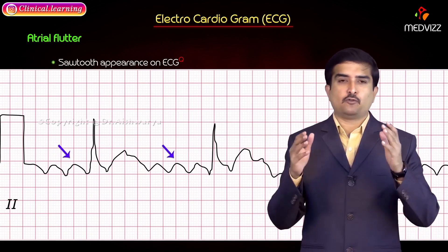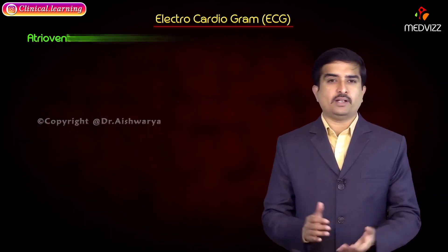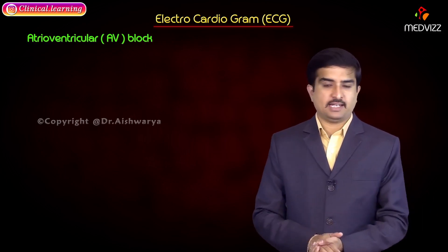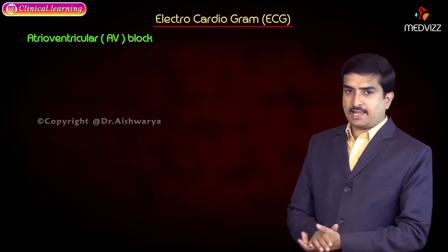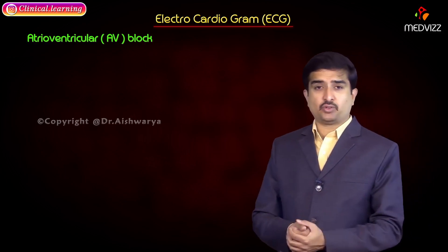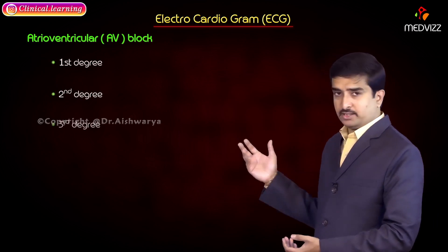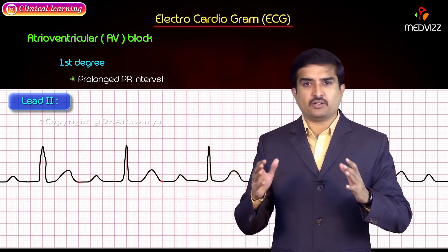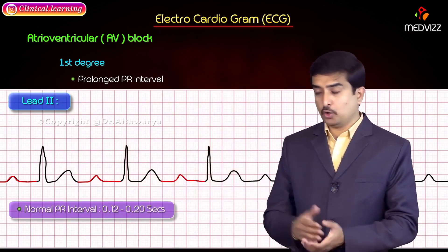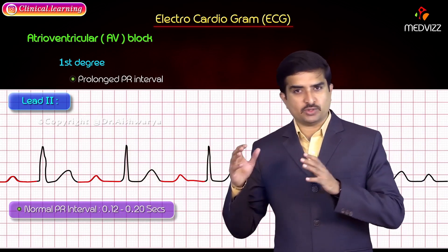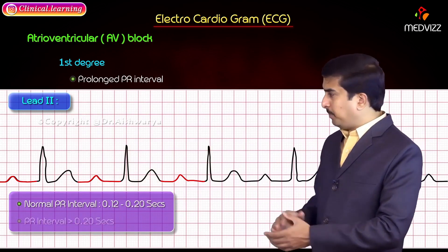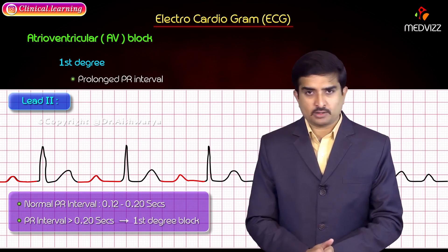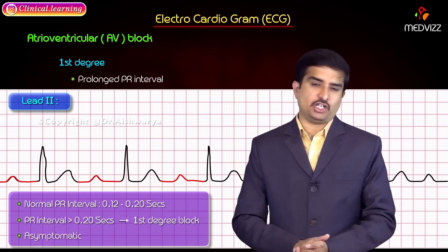Atrioventricular block, also called AV block, is divided into three types: first degree, second degree, and third degree. First degree heart block is defined by a prolonged PR interval greater than 0.20 seconds. Recall that the normal PR interval is 0.12 to 0.20 seconds. First degree heart block is asymptomatic in the majority of cases.